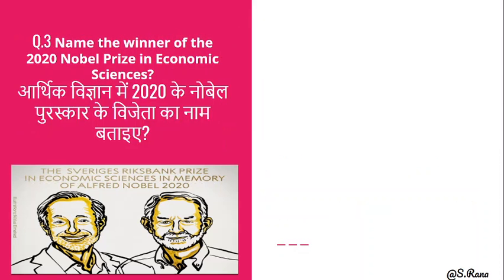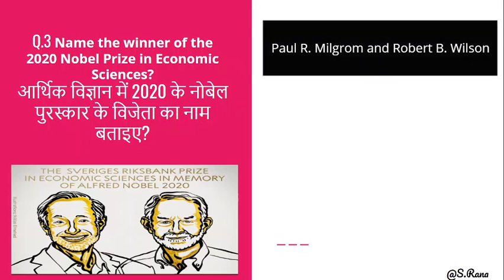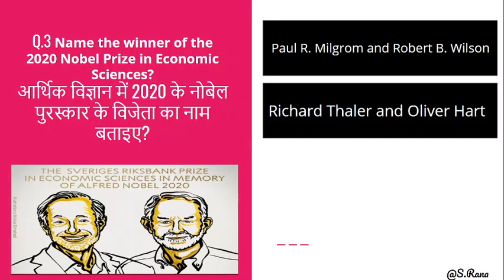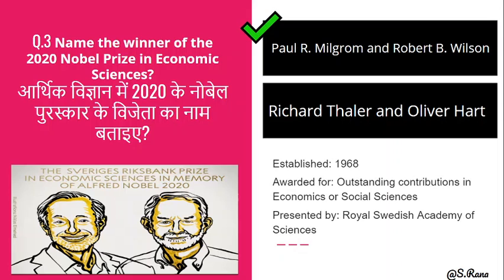Next question: Name the winner of the 2020 Nobel Prize in Economic Science. The options are Paul R. Milgram and Robert B. Wilson, or Richard Thaler and Oliver Hart. The correct answer is option A — Paul R. Milgram and Robert B. Wilson. They received this year's Nobel Prize in Economic Science, which is awarded for outstanding contributions in economics and social science by the Royal Swedish Academy of Sciences.